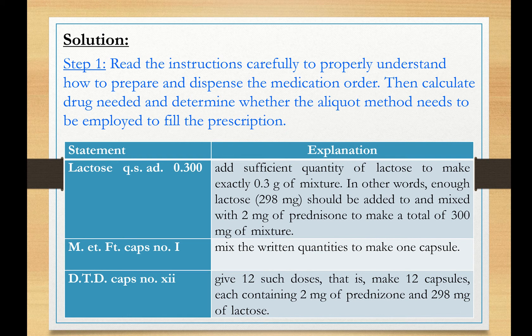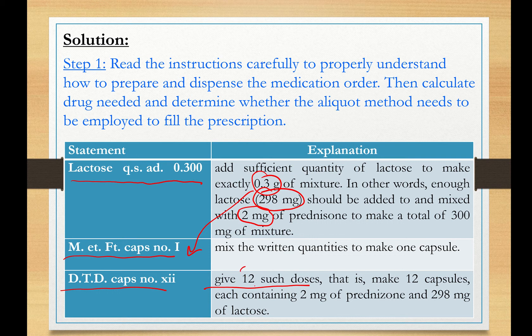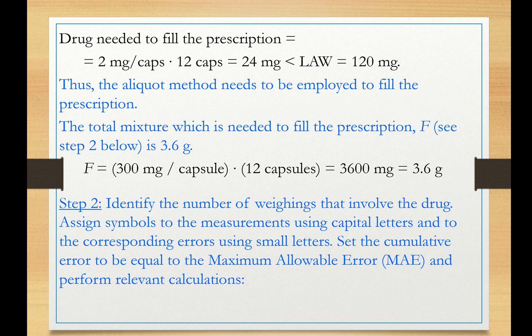So this is step one. The first statement, lactose Q is add 0.3, means that add sufficient quantity of lactose to make exactly 0.3 grams of mixture. Since the drug is 2 milligrams, the lactose in each capsule is 298 milligrams. Then it says mix and make capsule 1. So these 300 milligrams here is for one capsule. Now dispense gives such doses, give 12 such doses. So you need to basically make 12 capsules, each one containing 300 milligrams of mixture, drug and lactose. So these are our calculations here.